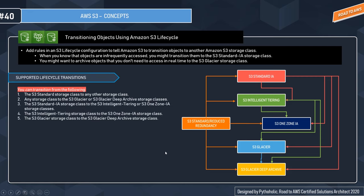The transition rules are: you can transition from S3 Standard to any other storage class; you can transition any storage class to Glacier or Glacier Deep Archive; you can transition from Standard IA to Intelligent Tiering or One Zone IA; you can transition from Intelligent Tiering to One Zone IA; and you can transition from S3 Glacier to S3 Glacier Deep Archive.